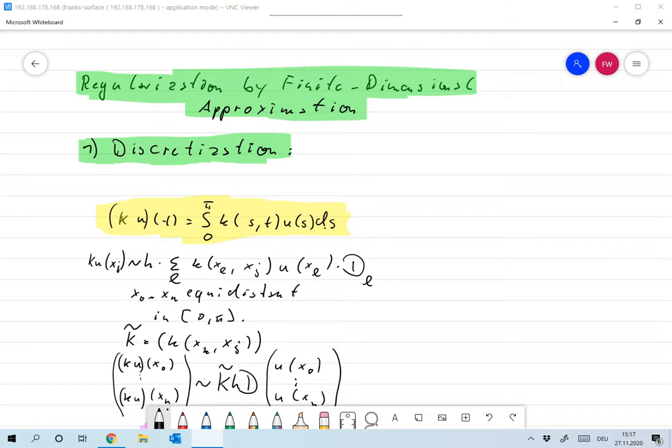You might ask yourself, why do we go through all that stuff with operators within finite dimensional vector spaces? Why don't we just discretize the whole thing and then we have finite dimensional vector spaces and everything should be fine? It's not completely wrong, but you have to be very careful when doing that. I want to show you a very simple example for that.